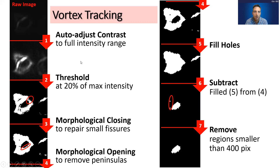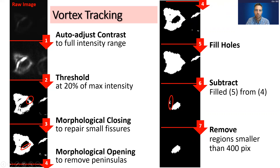With over 51,000 images in the data set, we certainly can't track the vortex manually. So we built an automated processing pipeline. We get a raw image — and because of the low exposure time from high-speed photography, we have to enhance the contrast a bit. We then threshold the image and take a few steps to repair small defects. For example, there is a small fissure here that prevents the region from meeting our criteria of a vortex, which is a contiguous region of black pixels completely surrounded by bright pixels. So we repair that fissure and clean up small peninsulas along the edge or remove small speckles.